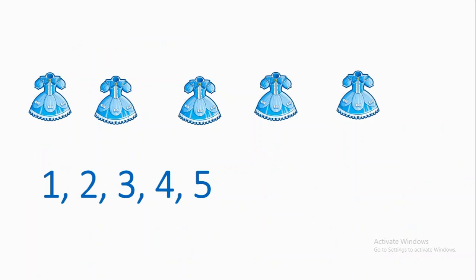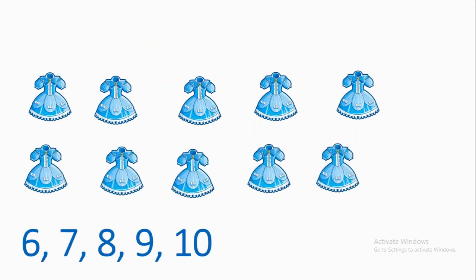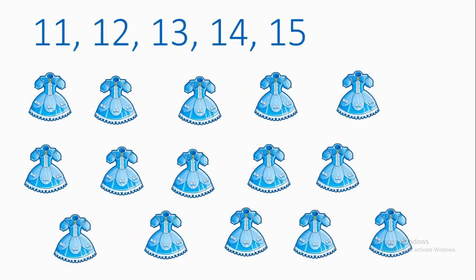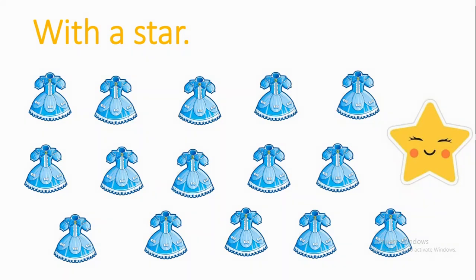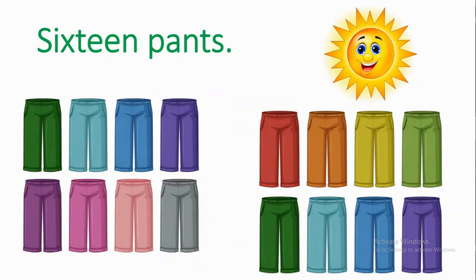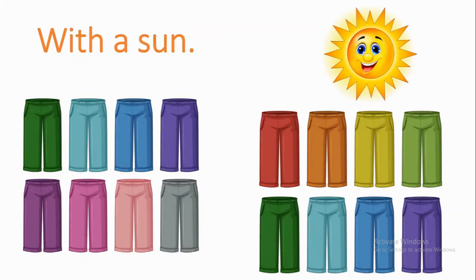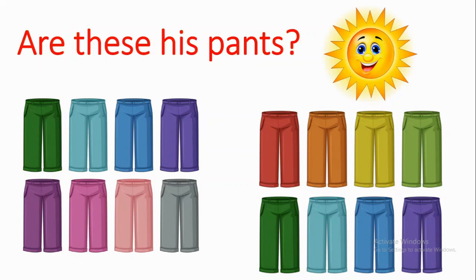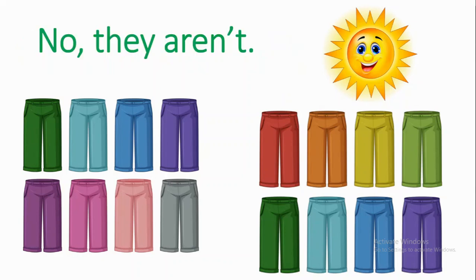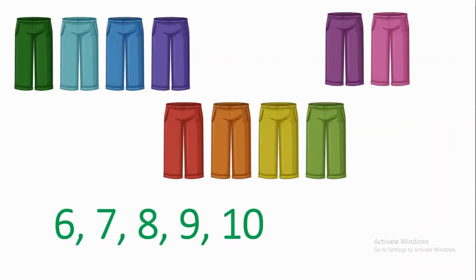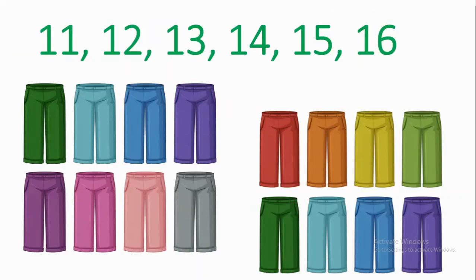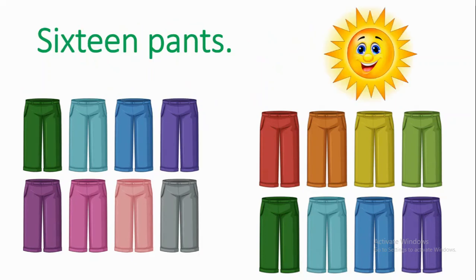Fifteen. 1, 2, 3, 4, 5, 6, 7, 8, 9, 10, 11, 12, 13, 14, 15. Fifteen dresses with a star. Sixteen pants with a sun. Are these his pants? No, they aren't. 1, 2, 3, 4, 5, 6, 7, 8, 9, 10, 11, 12, 13, 14, 15, 16. Sixteen pants with a sun.